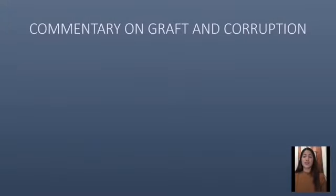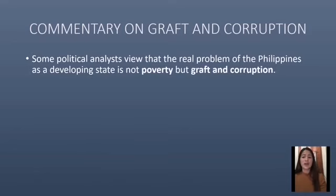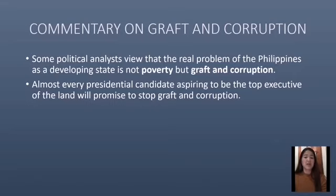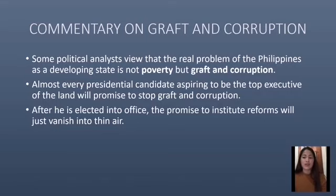In commentary on graft and corruption, history teaches us that this can be addressed by a supreme act of will. If there is any single individual in whom this executive will reposes, it is the President of the Philippines. Some political analysts view the real problem of the Philippines as a developing state not as poverty but as graft and corruption. Almost every presidential candidate aspiring to be the top executive will promise to stop graft and corruption, but after being elected, the promise to institute reforms often vanishes into thin air.